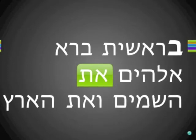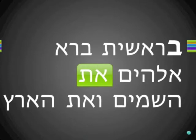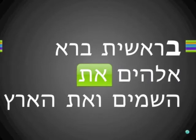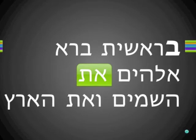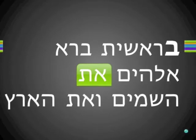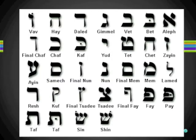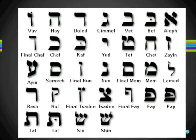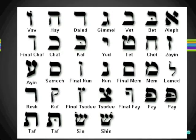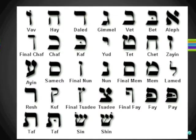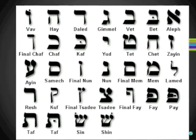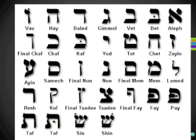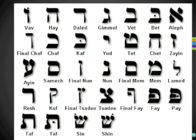This is Genesis 1:1. Remember, Hebrew reads from right to left: Bereshit, Berah, Elohim, Et, HaShamayim, V'ayet, HaAretz — 'In the beginning God created the heavens and the earth.' Notice the word highlighted in green. This graph shows the entire Hebrew alphabet. The top right is the first letter, the Aleph, and the bottom left is the last letter of the Hebrew alphabet, the Tav — and that is the word in green.